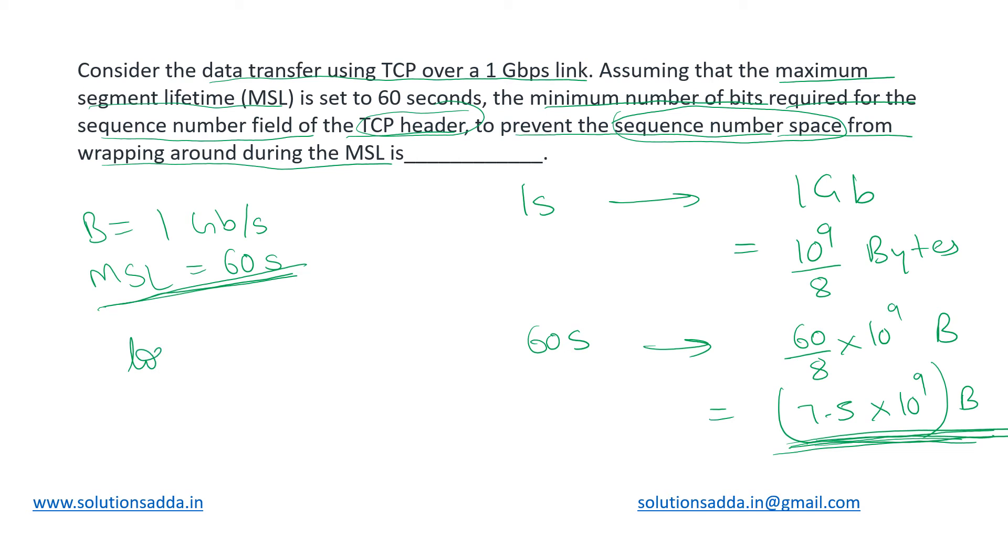And hence we will be determining the number of bits that this particular amount of segments will consume. So for that what we will do is, we will take log to the base 2, 7.5 into 10 raise to 9. This will give us, we can simplify this a bit: we can take log of 75 plus, this will become 75 into 10 power 8, so we can take plus 8, and then upon log 2 when we convert that base from 2 to 10.